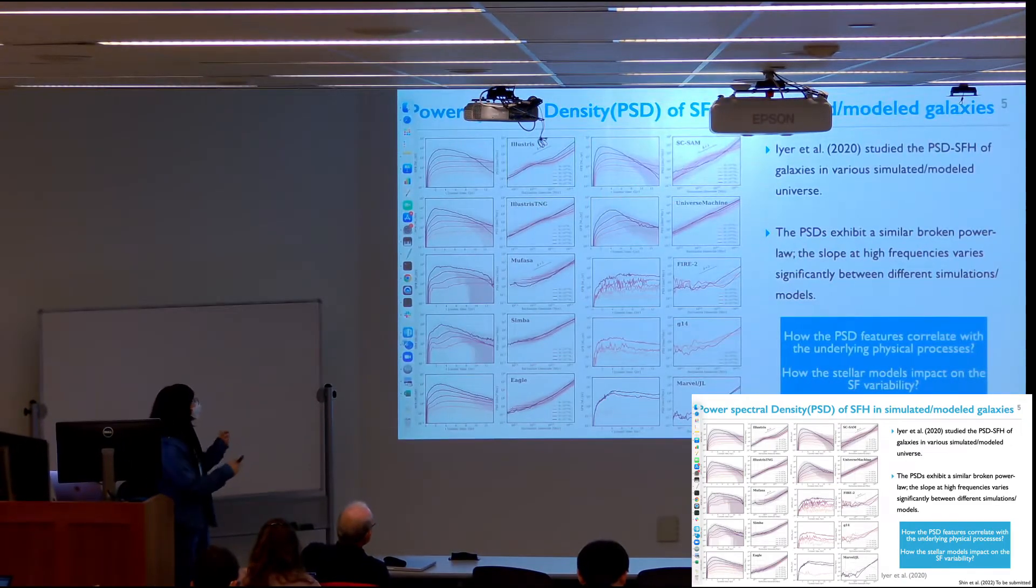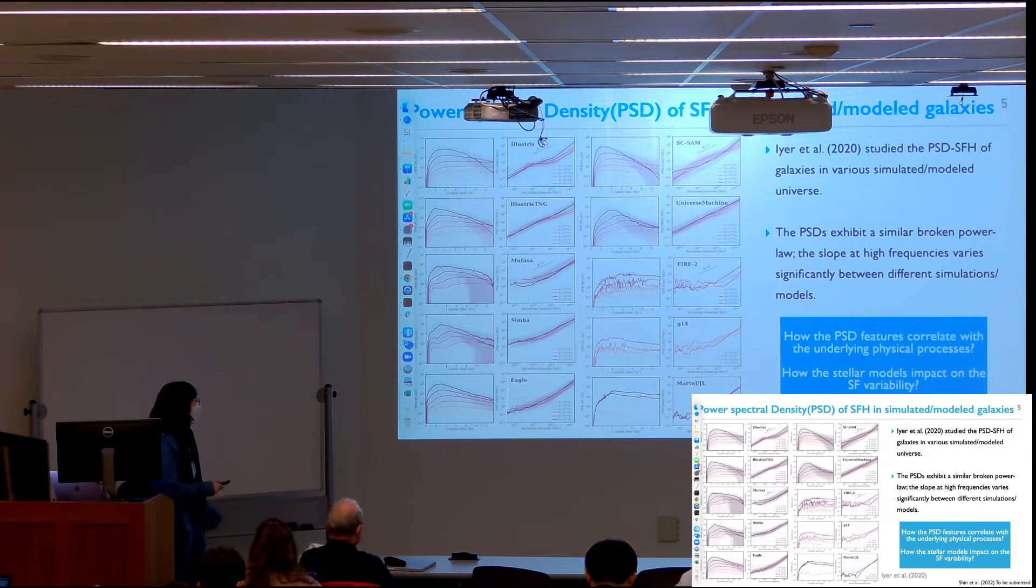Ayer et al. studied the PSD of star formation history of various galaxies in simulated and model universes. These six shows the cosmological hydrodynamic simulation results - left one is the star formation history and right one is the PSD of that. These six are the zoom-in simulation and semi-analytical model. This shows very great convergence in the longer time scale, while the slope in the high frequency scale, small time scale, varies very significantly between simulations. Now we can ask how the PSD feature correlates with the underlying physical processes, which might relate to how stellar feedbacks impact star formation variability.